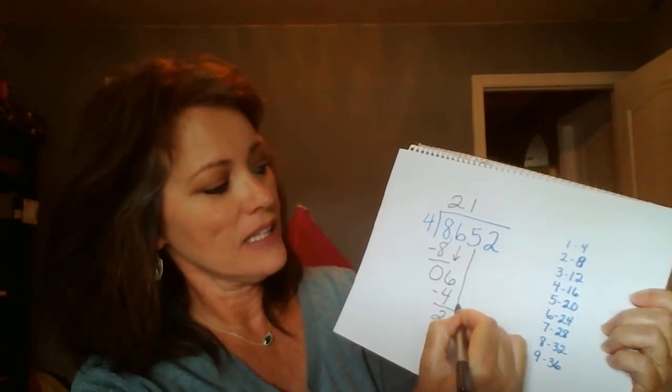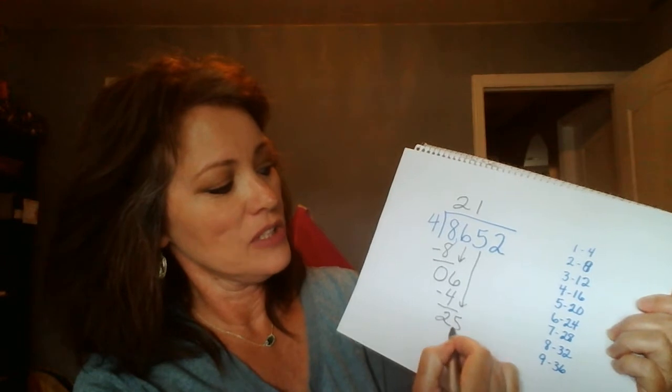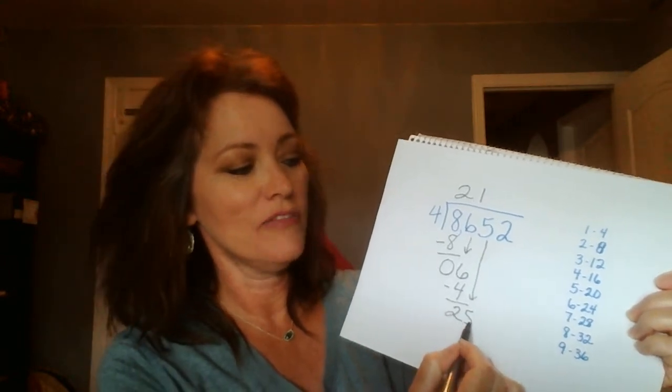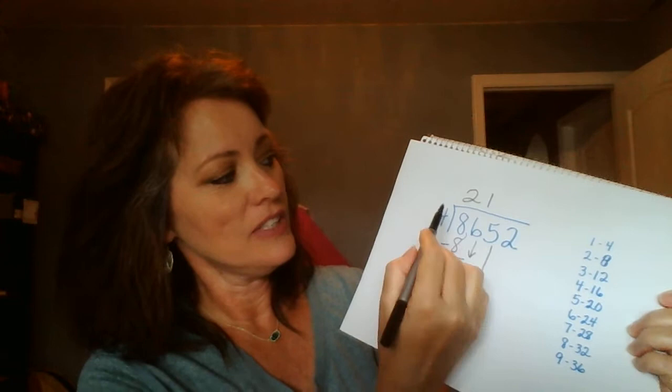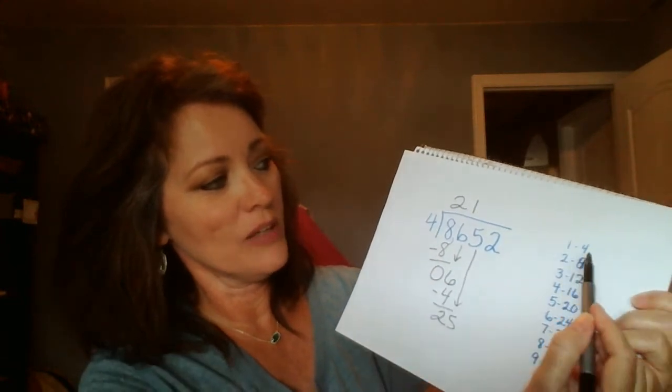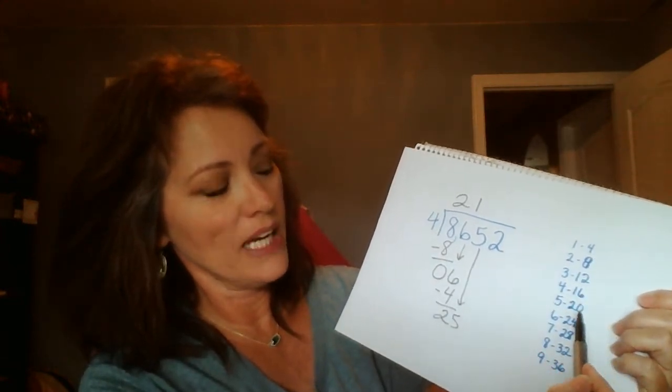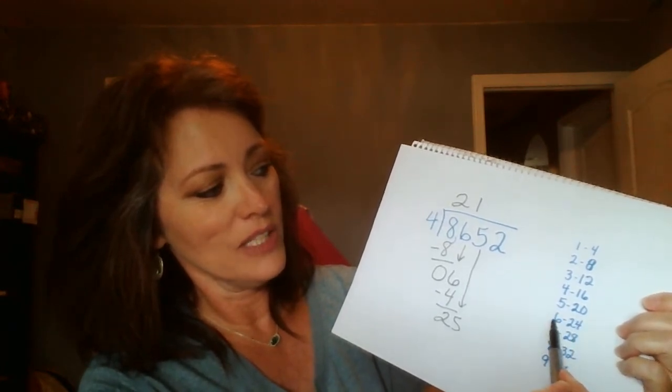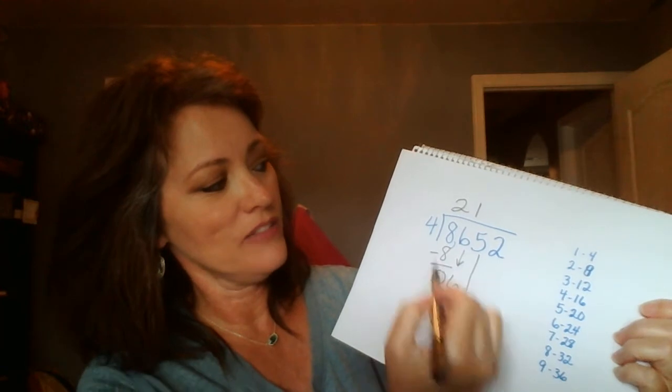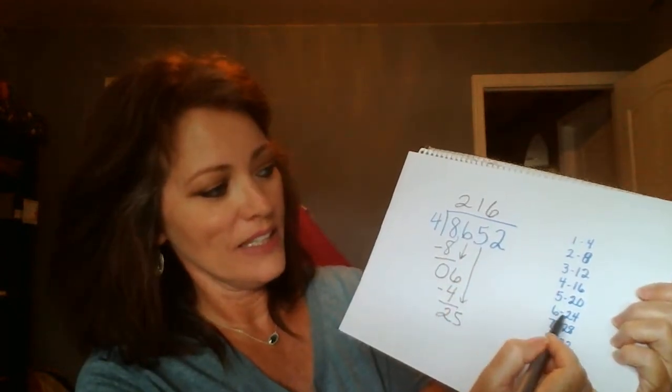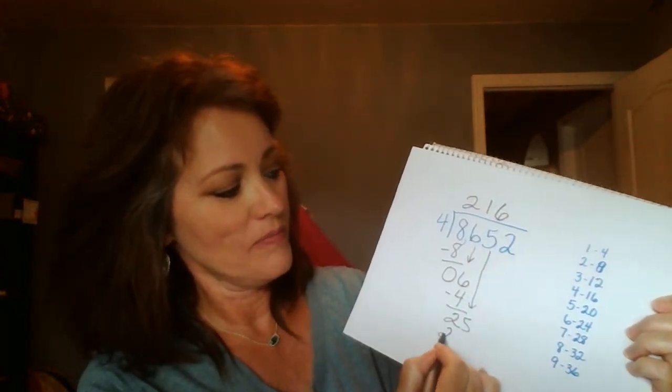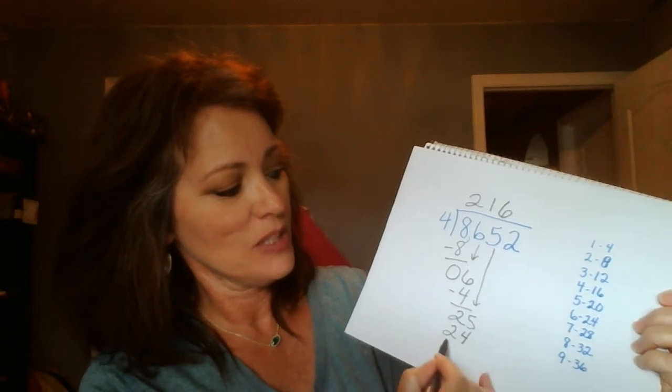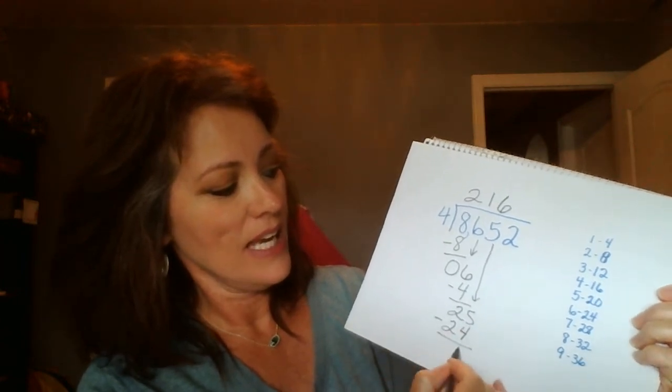Bring down the next digit, which makes two and five twenty-five. Twenty-five divided by four. We're looking at our multiples of four. We can't go past twenty-five. That's too high, so we stop at twenty-four. So the answer is six. Twenty-five divided by four is six. Six times four, we see it right there, is twenty-four. Subtract and you get one.